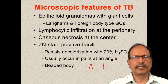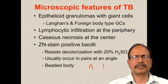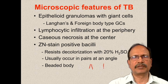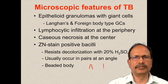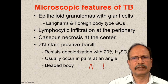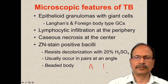The microscopic features of tuberculosis include epithelioid granulomas characteristically seen with giant cells. Among the giant cells, Langhans-type giant cells are more frequently encountered, though not very specific for tuberculosis. These epithelioid granulomas show lymphocytic infiltration around them and caseous necrosis at the center. Caseous necrosis resembles a powdery eosinophilic material at the center. On Ziehl-Neelsen stain, you may demonstrate the bacilli, which occur in doublets, at an angle to each other, and are typically beaded.